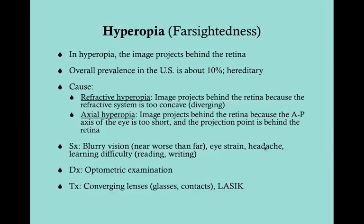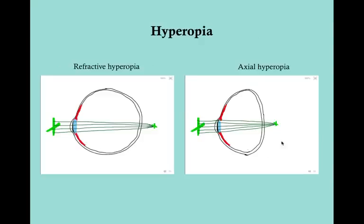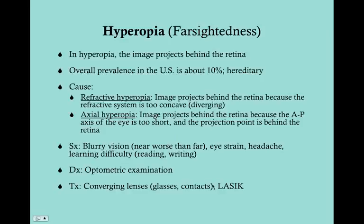Diagnosis is made by optometric examination. Treatment is converging lenses - the opposite of myopia - which allows the image to be projected onto the retina rather than behind it. LASIK can also be performed for hyperopia, but only after the eye has finished developing, so it's done on adults, not young children.